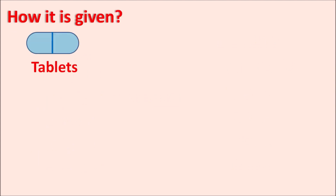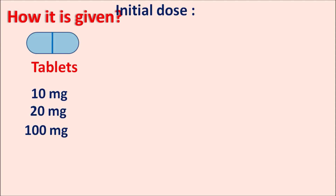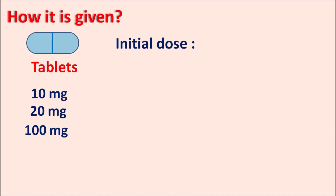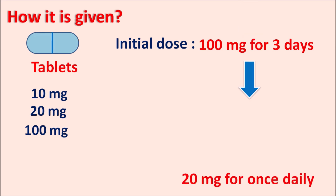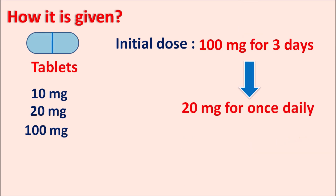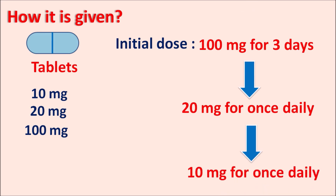Leflunomide is available as a tablet in three strengths: 10 mg, 20 mg, and 100 mg. The initial dose for rheumatoid arthritis is 100 mg given once daily for three days. To reduce myelosuppression and immunosuppression, after three days it is maintained at 20 mg once daily. If this is not tolerated, the dose can be further reduced to 10 mg once daily.